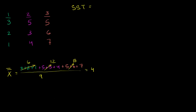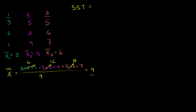Let me show you that that's the exact same thing as the mean of the means. The mean of group 1 is 3 plus 2 plus 1 — that's 6 — divided by 3 data points, so that equals 2. The mean of group 2: 5 plus 3 plus 4 is 12, divided by 3 is 4. And the mean of group 3: 5 plus 6 plus 7 is 18, divided by 3 is 6. So if you take the mean of the means — 2 plus 4 plus 6 is 12, divided by 3 — you get 4. So now that we've calculated it, we can actually figure out the total sum of squares.